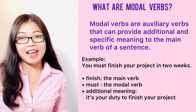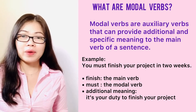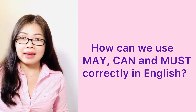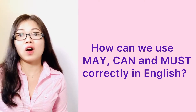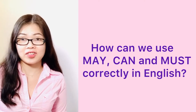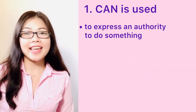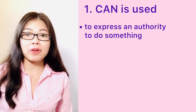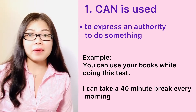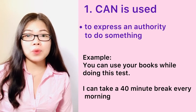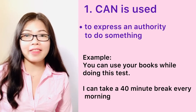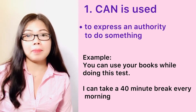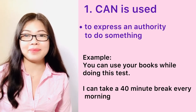Is it clear everyone? Now let me explain how to use may, can and must correctly in English. One: can. Can is used to express an authority to do something. For example, you can use your books while doing this test. I can take a 40-minute break every morning.